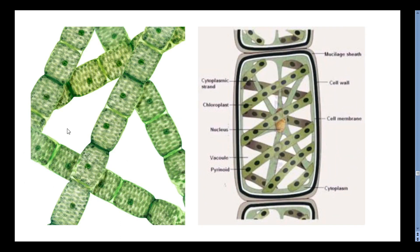This is Spirogyra — a multicellular form. Each enlarged cell shows a mucilaginous sheath, below which is a cell wall, then a cell membrane. Inside the cell is cytoplasm at the periphery, pyrenoid structures to store food material, vacuoles, a central nucleus, chloroplasts, and cytoplasmic strands connecting the nucleus to the cell membrane.